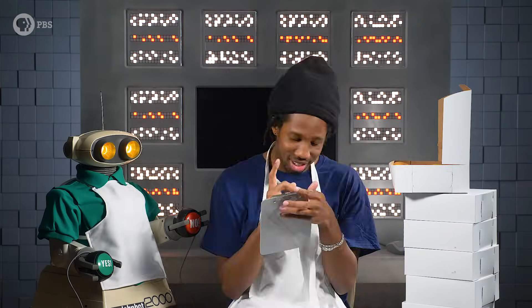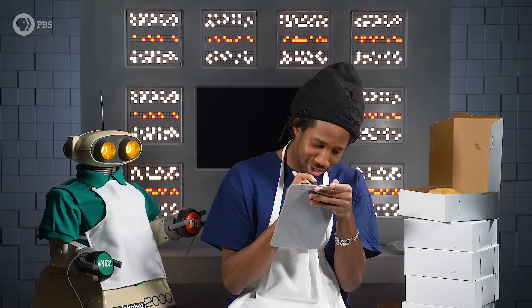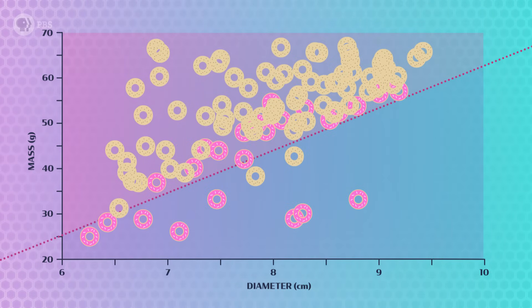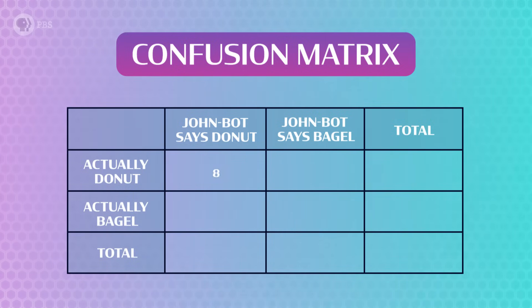After training John Greenbot's perceptron, we have to test it on new data to see how well he's learned. I got a hundred new bagels and doughnuts for him to classify. Overall, he classified 25 doughnuts and 75 bagels. We can visualize the results on a graph with a decision boundary, but we can also put the results in a table called a confusion matrix — because it tells us where John Greenbot was confused. He got 8 doughnuts correct and 73 bagels correct, but said a bagel was a doughnut twice, and said a doughnut was a bagel 17 times.